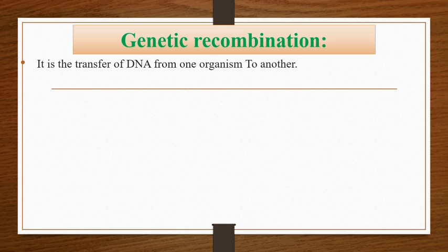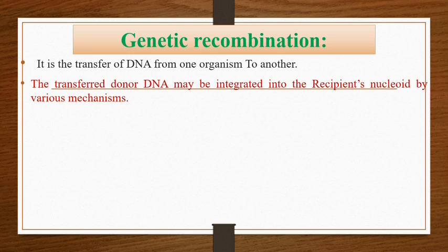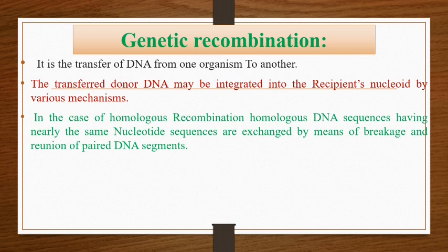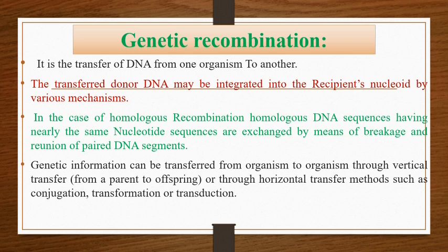Genetic recombination is the transfer of DNA from one organism to another. The donor DNA may be integrated into the recipient nucleoid by various mechanisms. In homologous recombination, DNA sequences having nearly the same nucleotide sequence are exchanged by breakage and reunion of paired DNA segments. Genetic information can be transferred vertically or through horizontal transfer methods such as conjugation, transformation, or transduction. Bacterial genes are usually transferred to members of the same species, but occasionally transfer to other species can also occur.